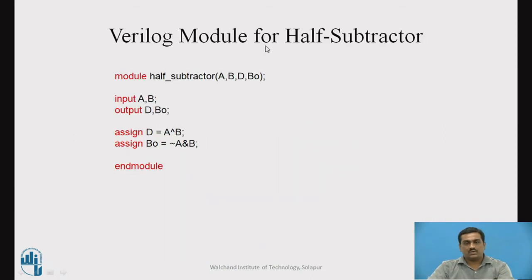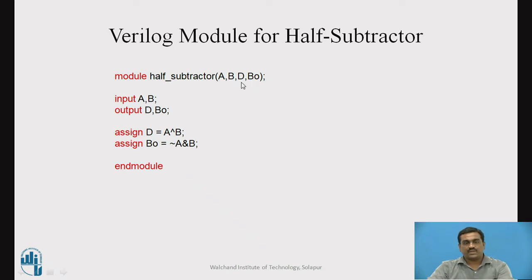This is the Verilog model definition for the half subtractor circuit. The module definition starts with the module keyword, and the name of this module is given as half_subtractor. Inside the brackets, the list of inputs and outputs are given — inputs are A and B, and the outputs are D and BO. In the next two lines the inputs and outputs are formally defined.